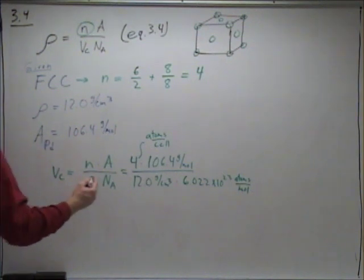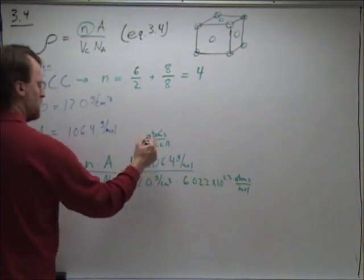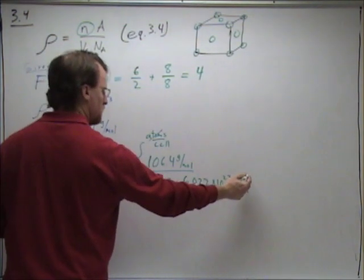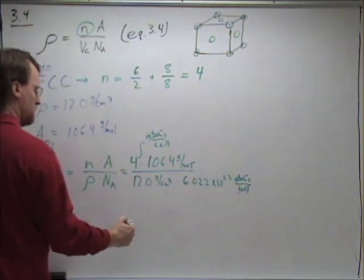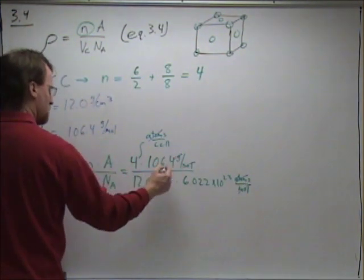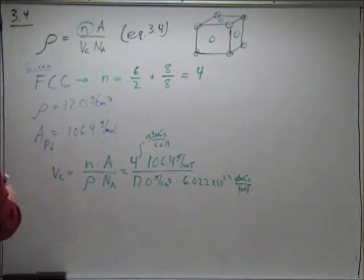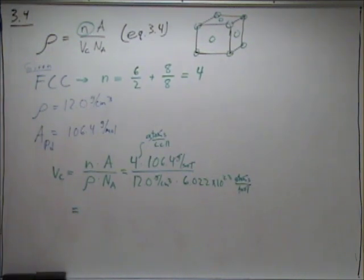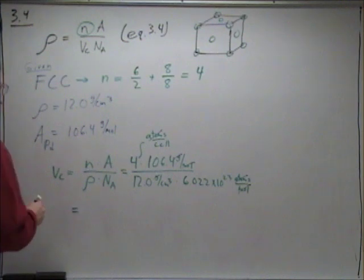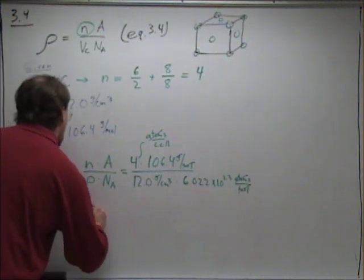Cancelling out units — atoms per cell, atoms per mole, mole, and grams — we end up with a volume of 5.89 times 10 to the negative 23rd cubic centimeters.